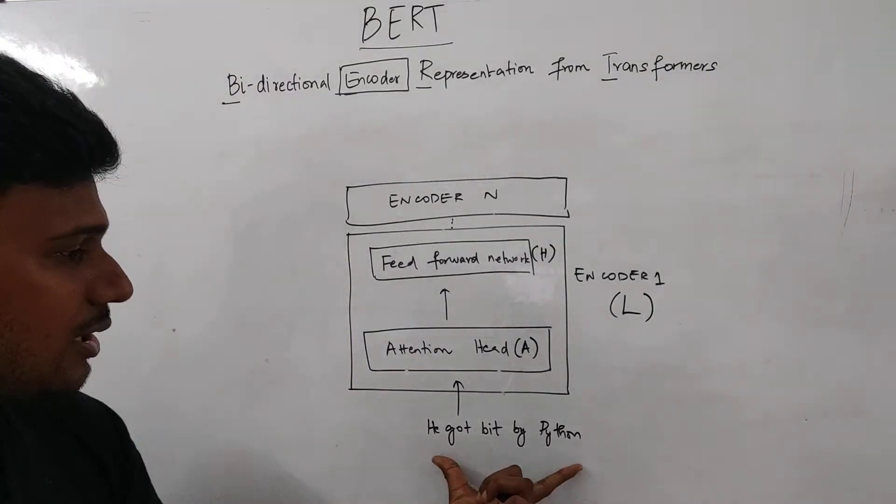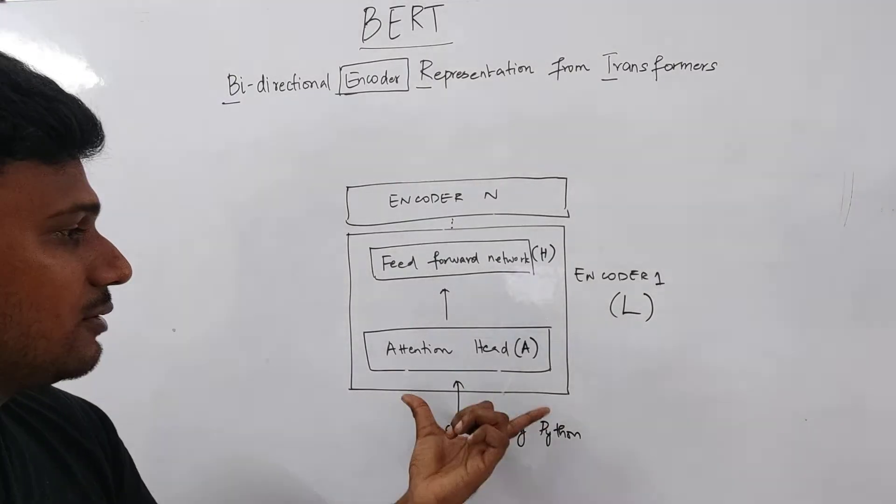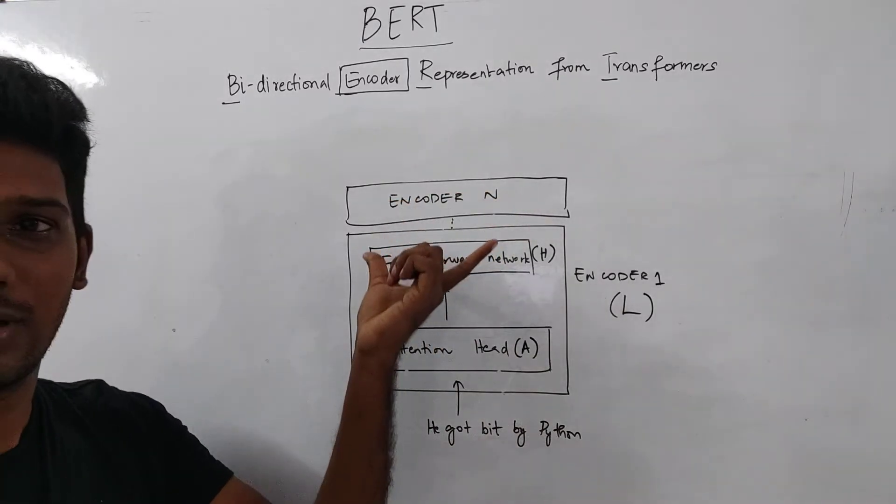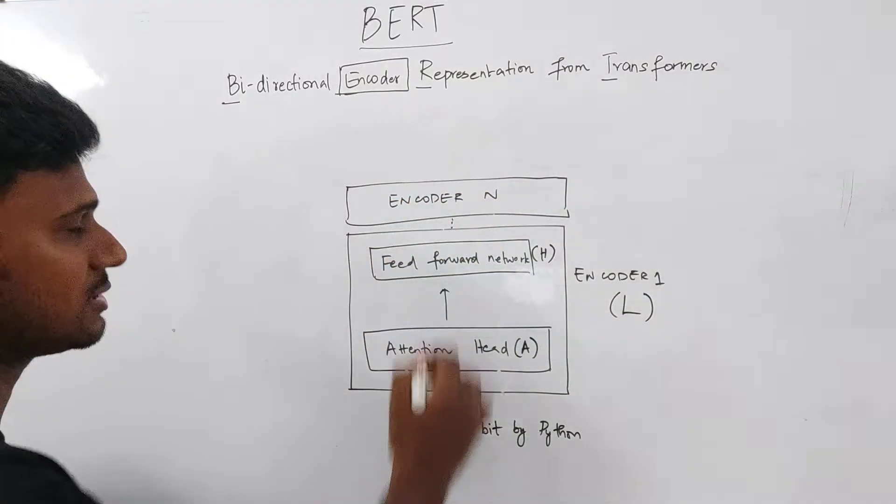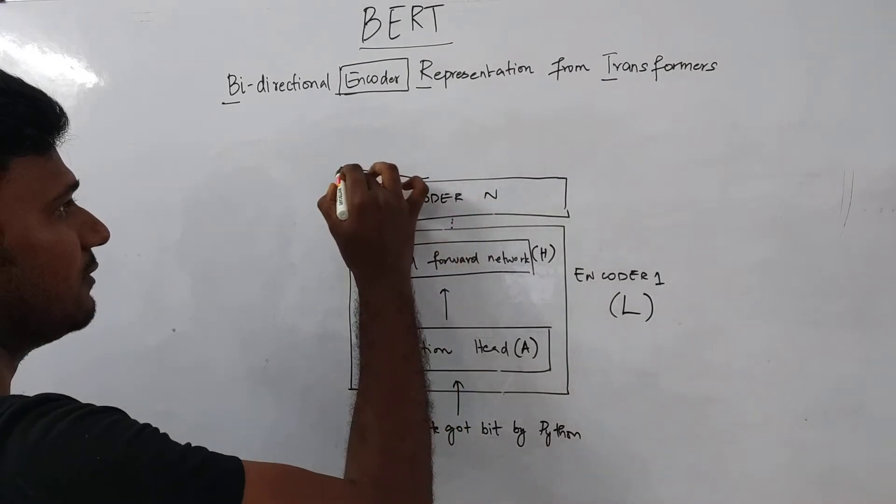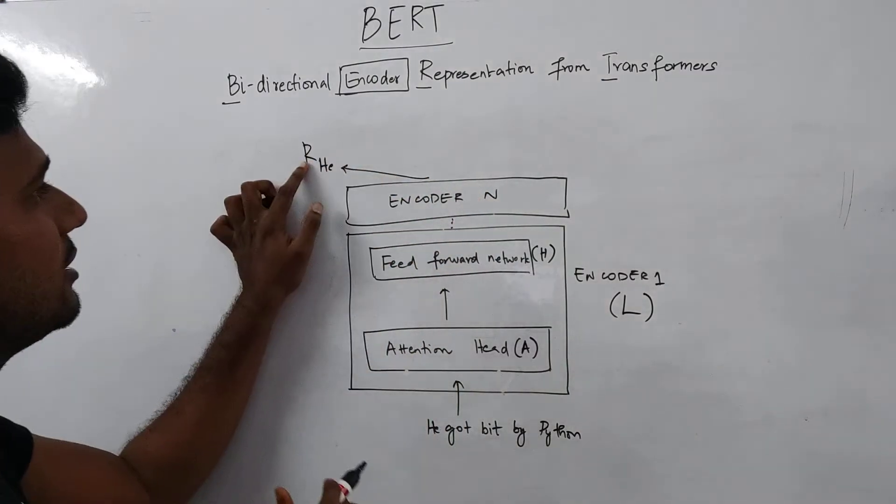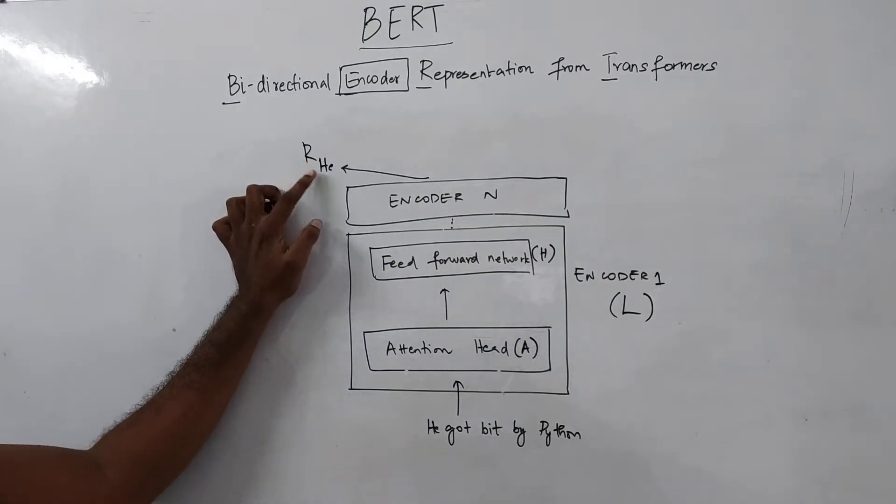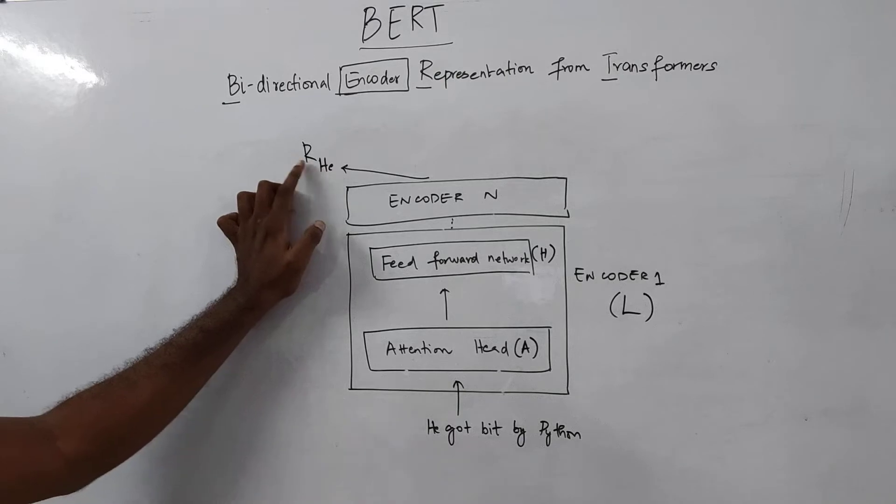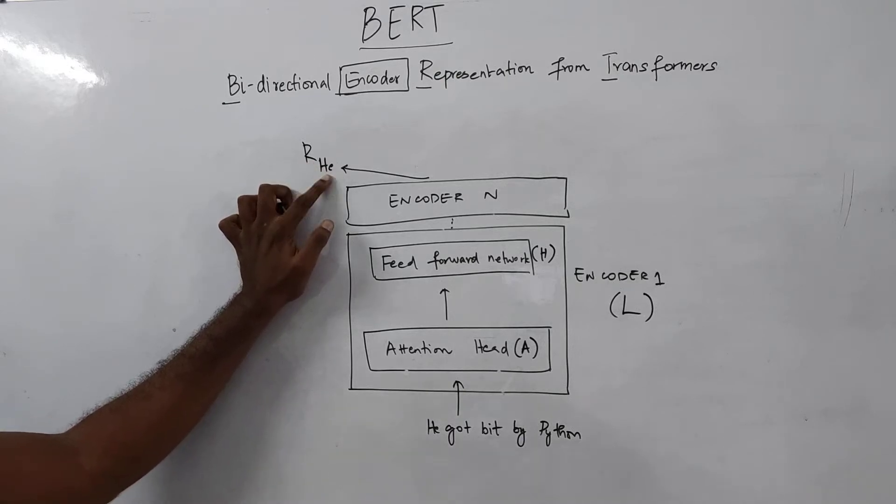And since we got the input sentence here, it will go through all these different layers and it will come out with different representations. For example, here, we'll have a representation for he. So R here denotes the representation and R in the subscript, we write he, which means this is the representation of the word he.